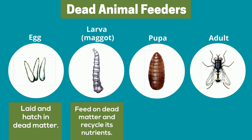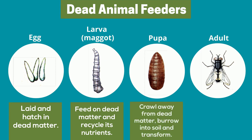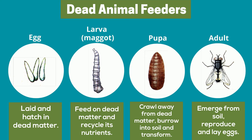Once the larvae grow enough, they crawl away from the carcass, burrow into soil, and transform. The adult fly emerges. After it reproduces, it will seek out more dead animals to lay its eggs on and thus continue the cycle.